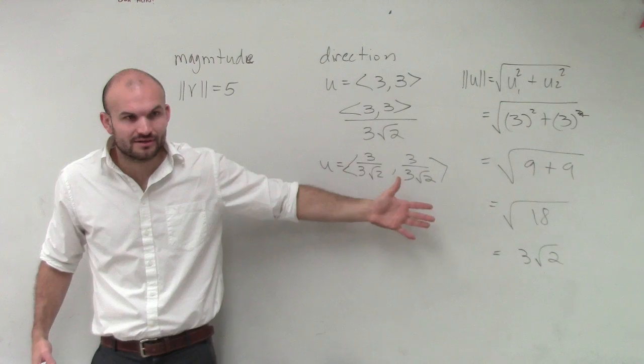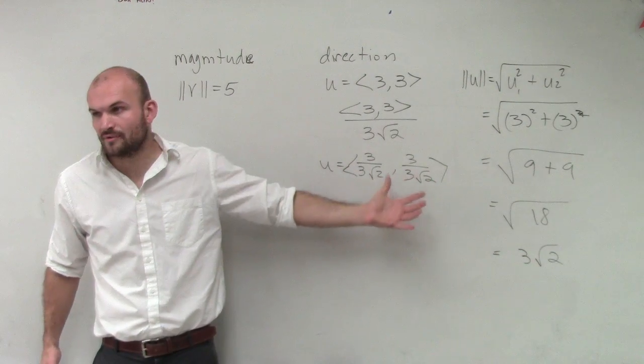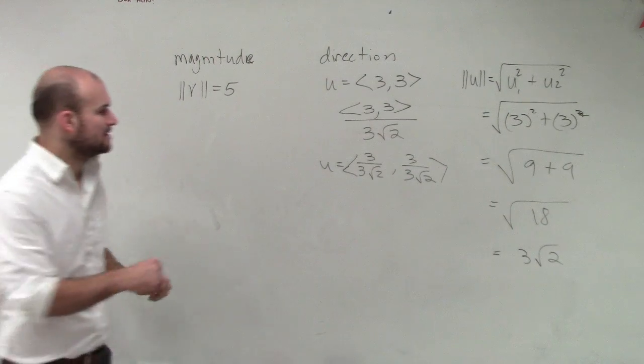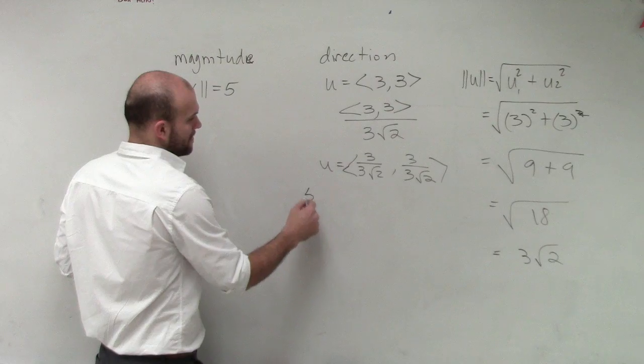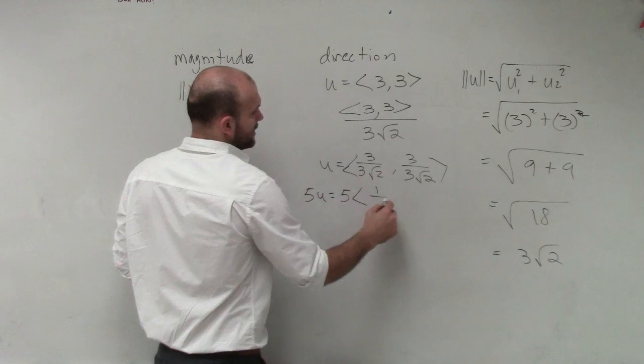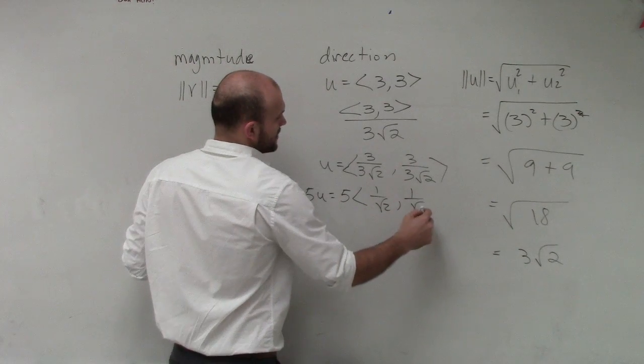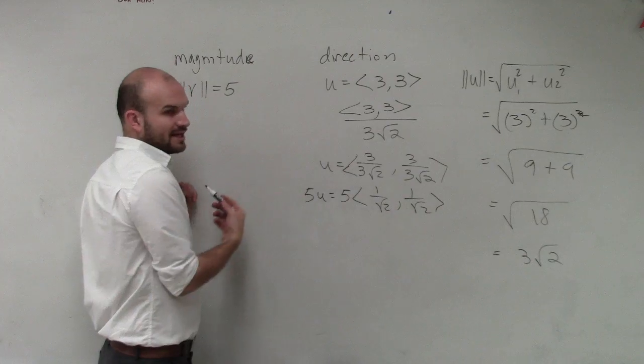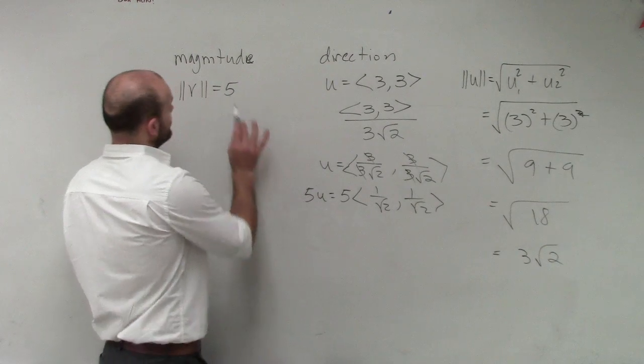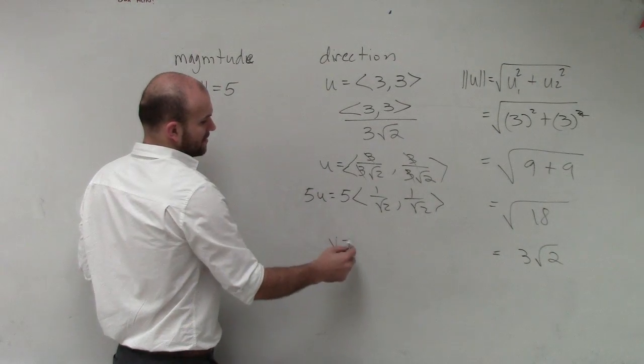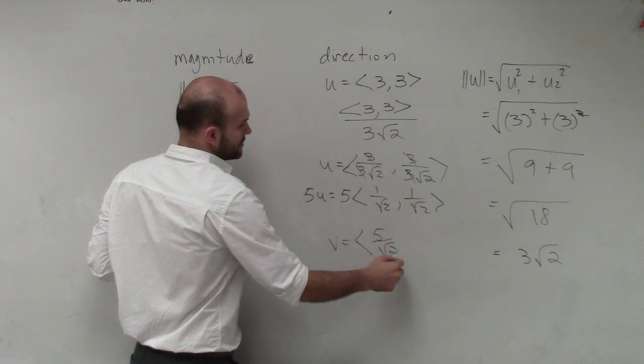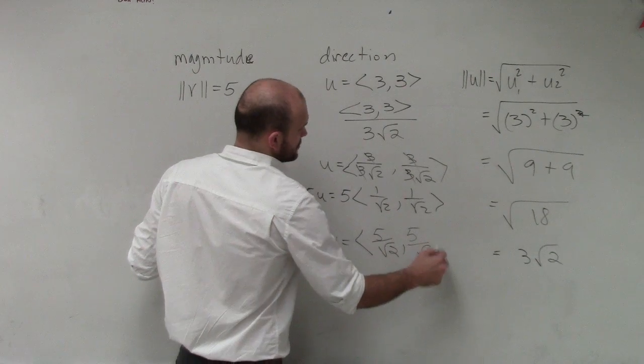So if my unit vector, we're going to be in the same direction as the unit vector. Now all I need to do is multiply by the magnitude of 5. So I'm just going to say 5u is going to equal 5 times <1 over square root of 2, 1 over square root of 2>, as those 3s divide up to 1. So now my vector v is now just simply going to equal <5 over square root of 2, 5 over square root of 2>.